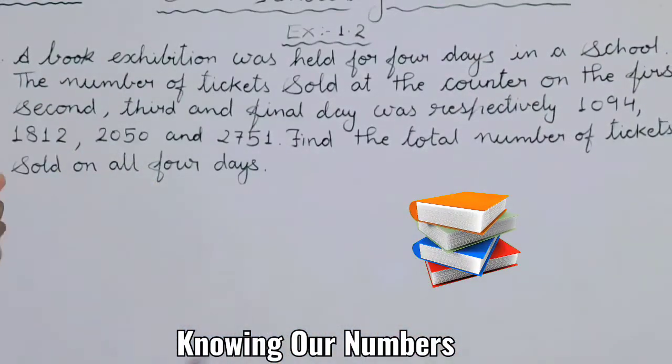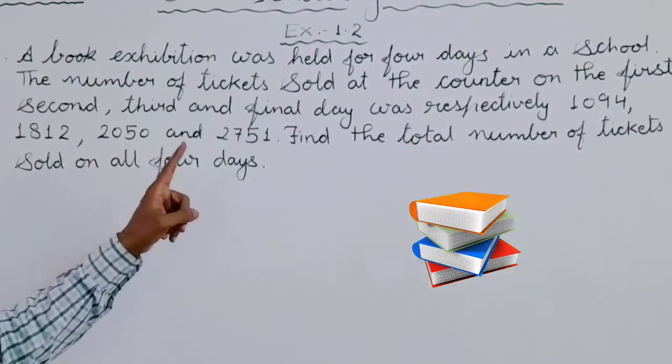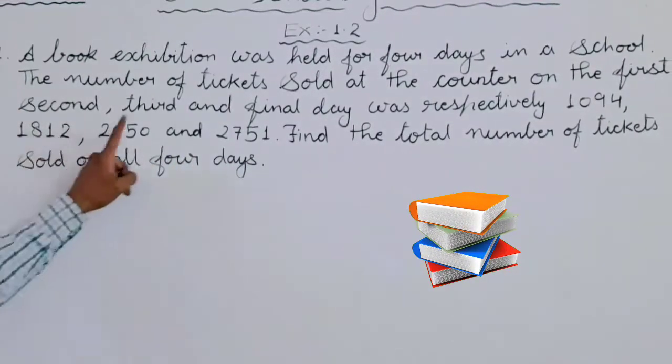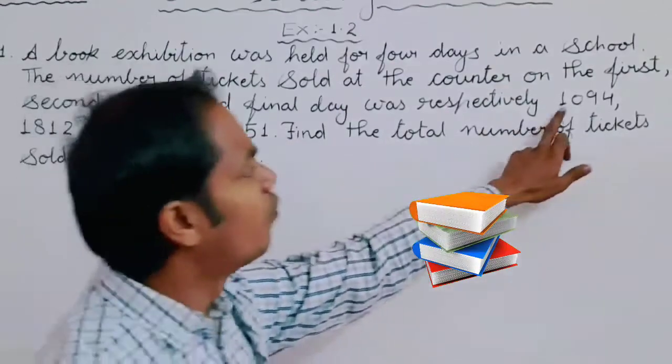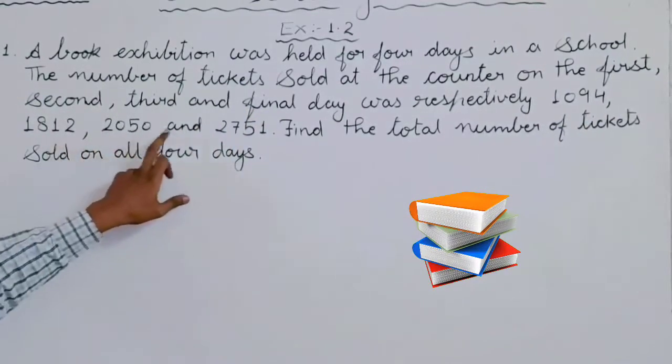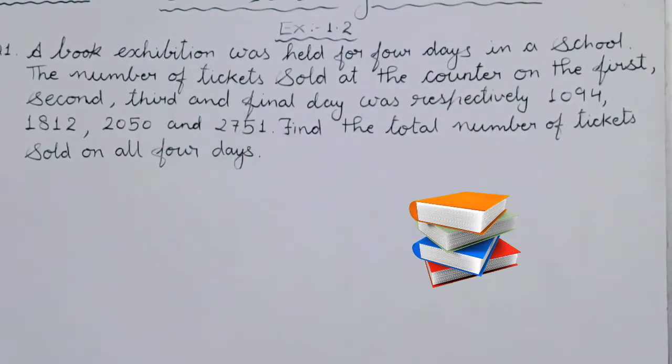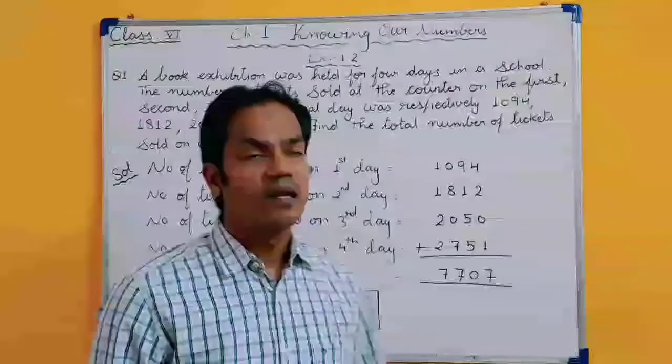A book exhibition was held for 4 days in school. The number of tickets sold at the counter on the 1st, 2nd, 3rd and 4th day respectively: 1094, 1812, 2050 and 2751. You have to find the total number of tickets sold on all 4 days.